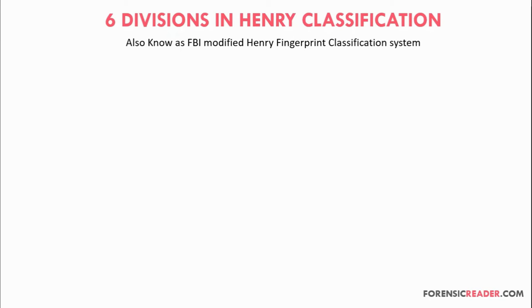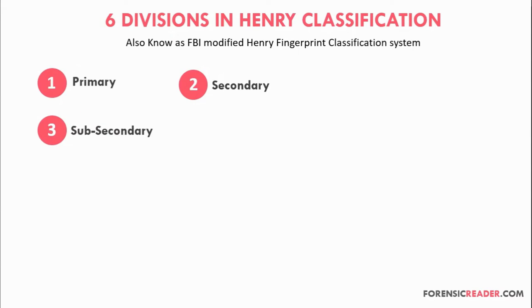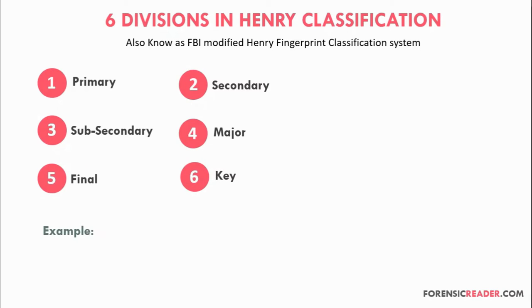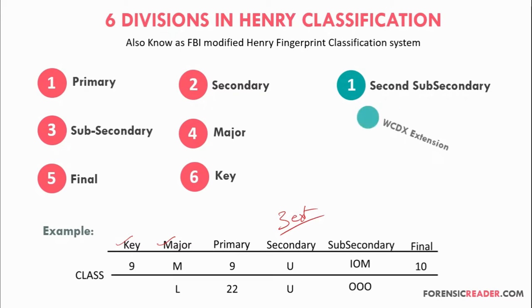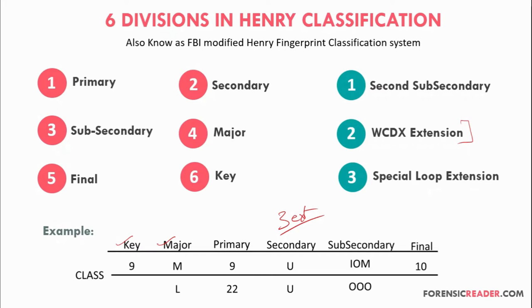The six divisions in Henry classification — also known as the FBI Modified Henry Fingerprint Classification System — are: primary, secondary, sub-secondary, major, final, and key. Apart from these, there are three more extensions extensively used by FBI: the second sub-secondary, the WCDX extension used majorly for whorls, and the special loop pattern used when all 10 fingers have loop patterns.